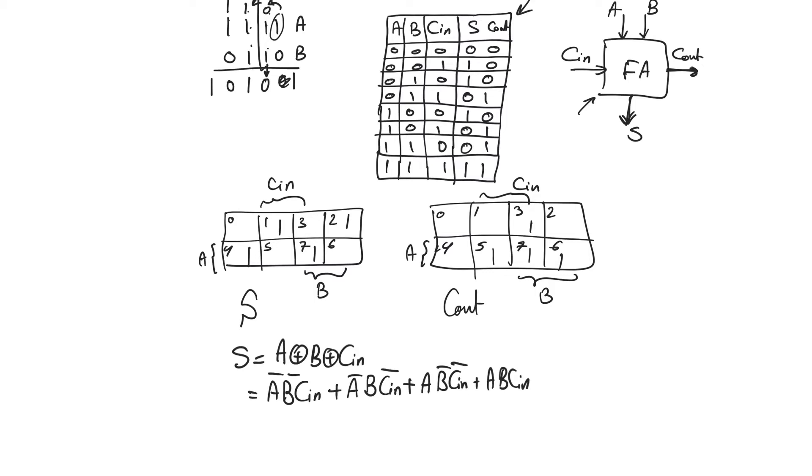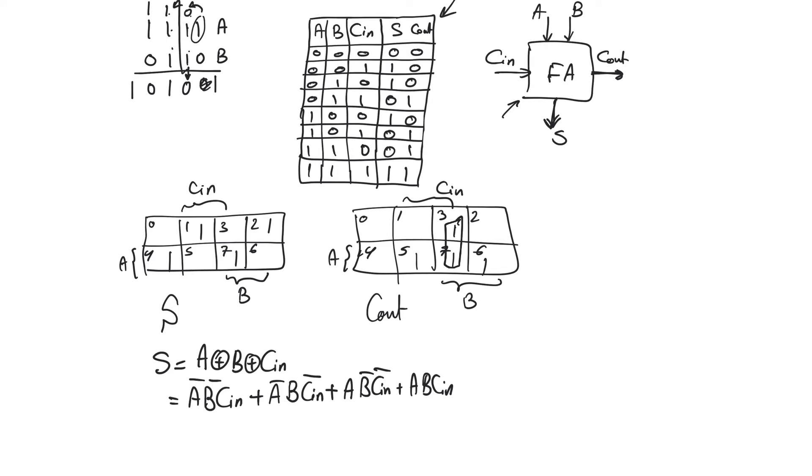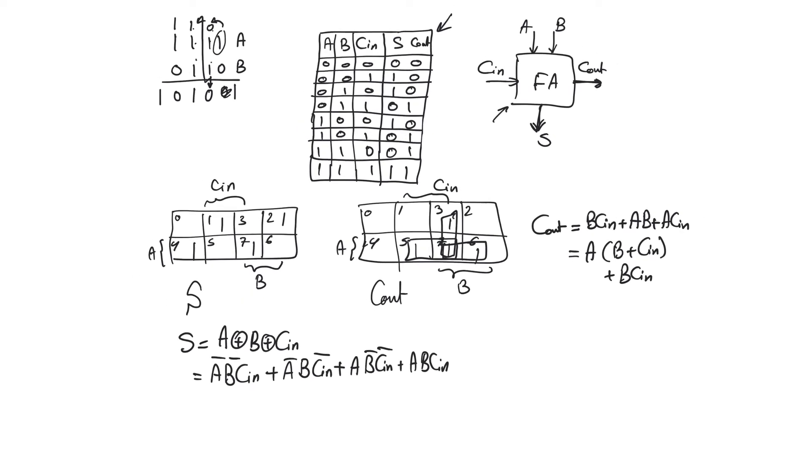For carry out, on the other hand, we can minimize by taking squares around all of these min terms to produce a carry out function which is equal to B CN plus A B plus A CN. So we have a function that can be minimized and can be further minimized by taking A as a common factor, for example, or B or CN in one of the terms.